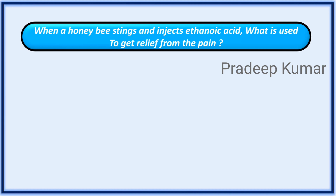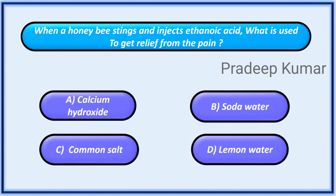When a honeybee stings and injects ethanoic acid, what is used to get relief from the pain? Options: A. Calcium hydroxide, B. Soda water, C. Common salt, D. Lemon water.